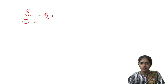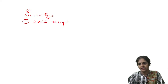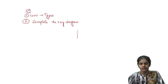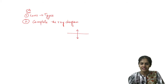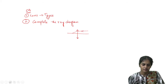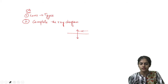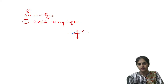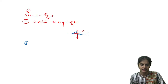They may ask you to complete a ray diagram — half the ray diagram is given and you need to complete it. For example, for a convex lens, they will give you part of the diagram and you have to complete it up to the focal point where the rays meet.